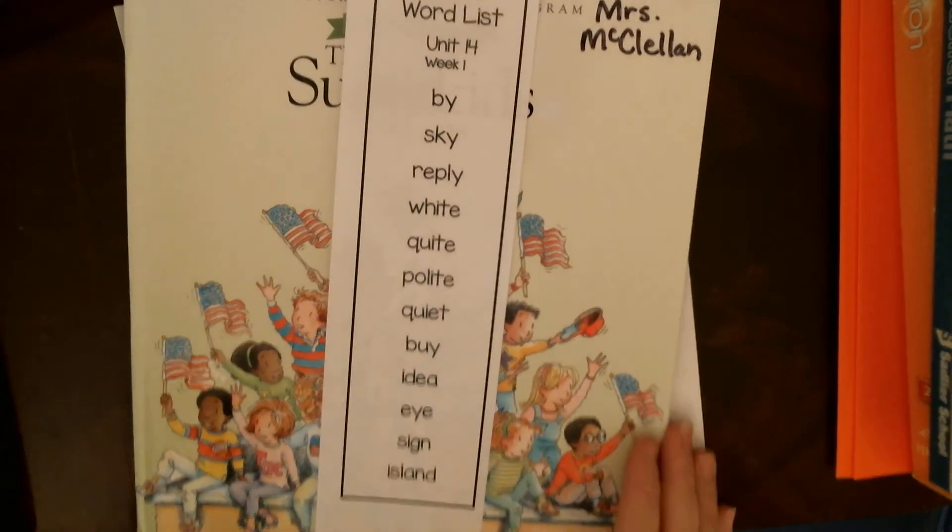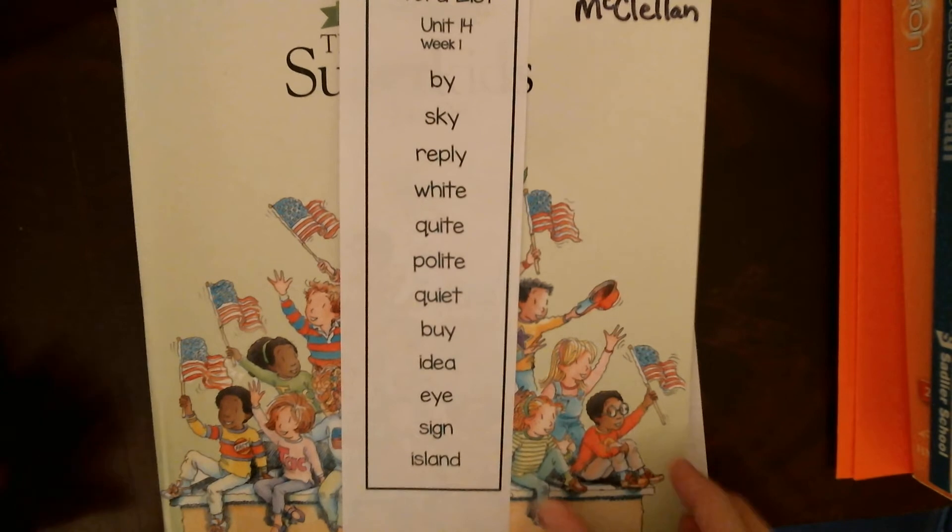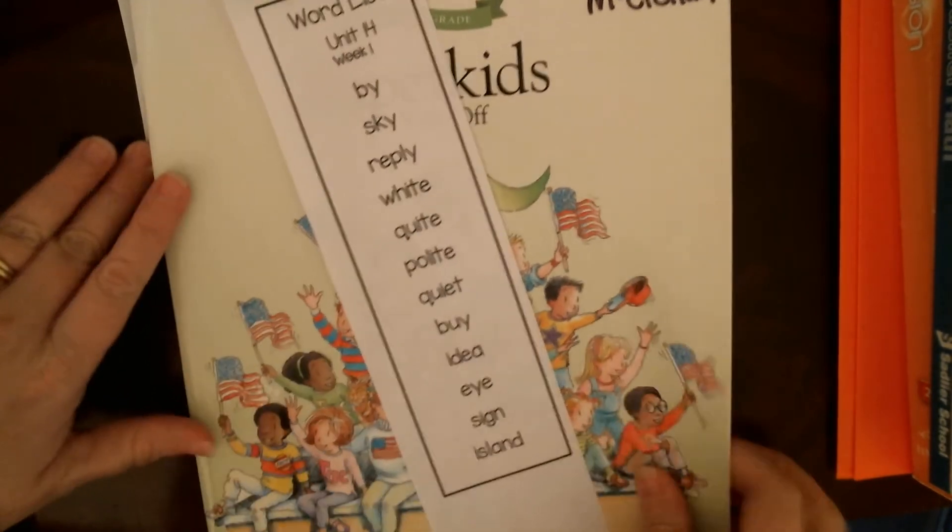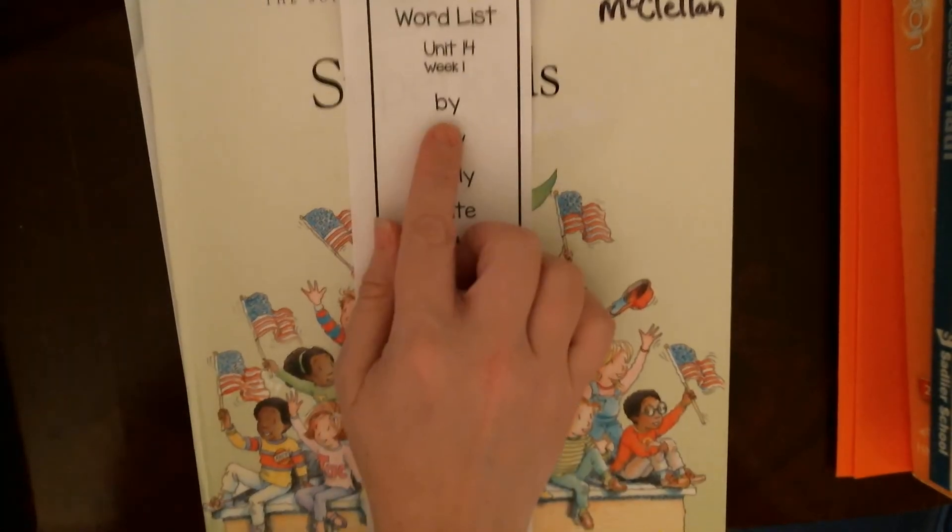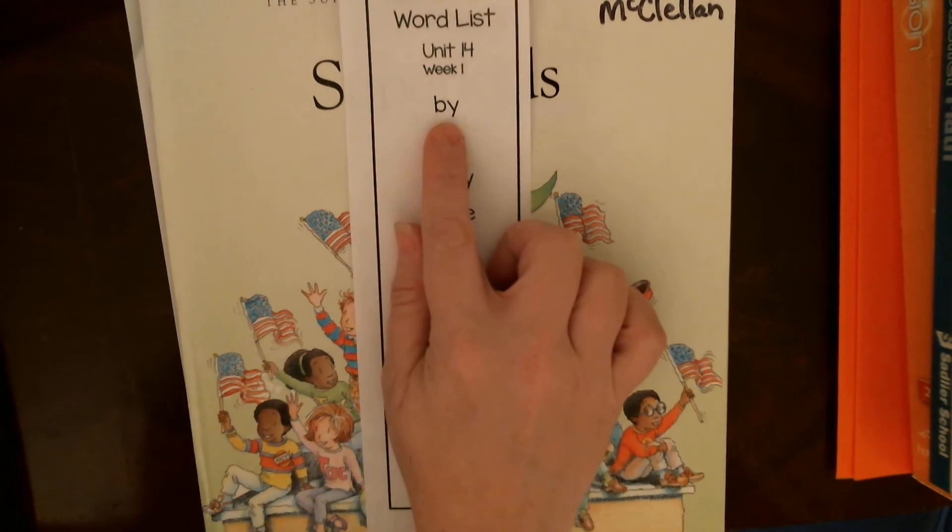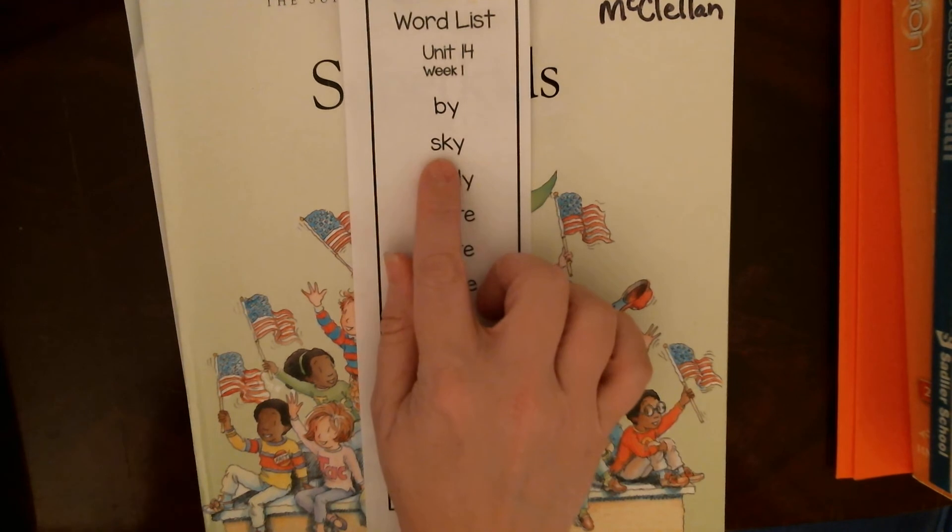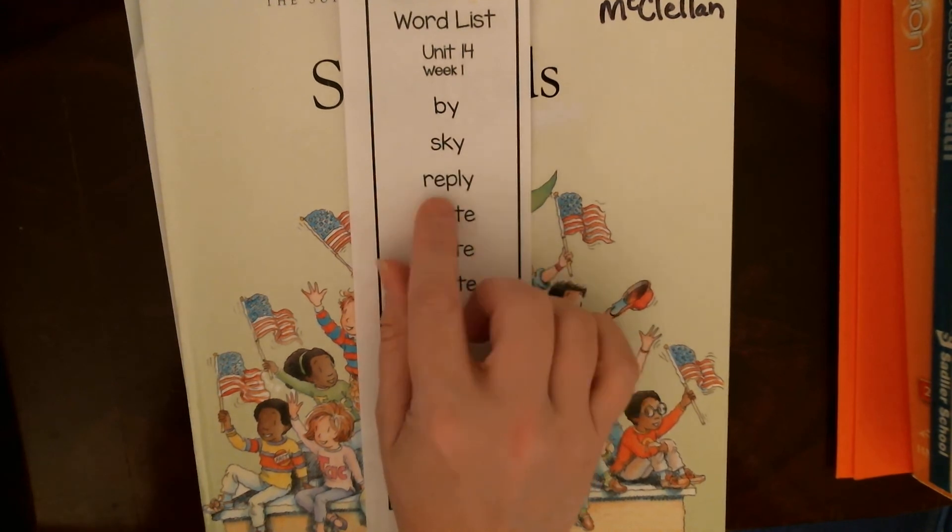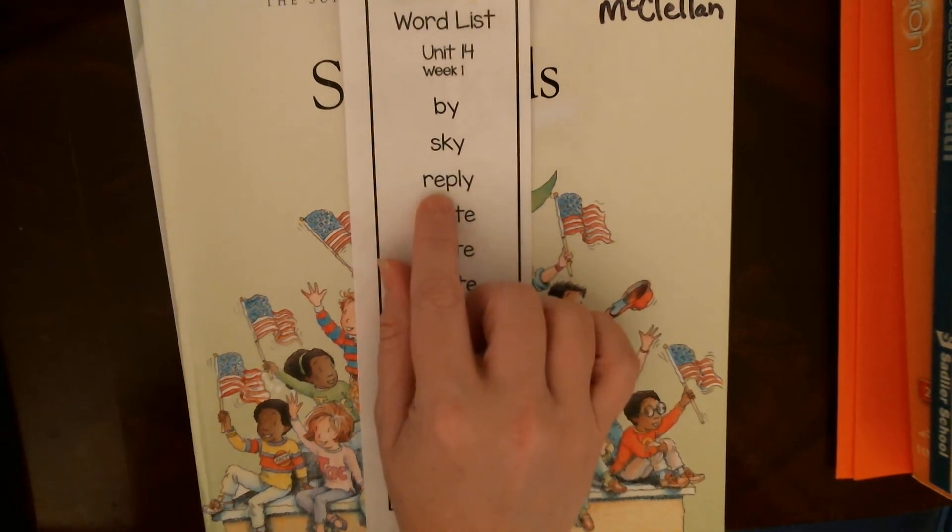These are all long I words. Some of them are spelled ways that we've learned before, like the one syllable with Y at the end. We know that Y makes the I sound. So we have by, sky. Sometimes it's two syllables.